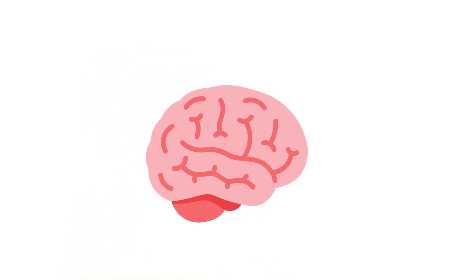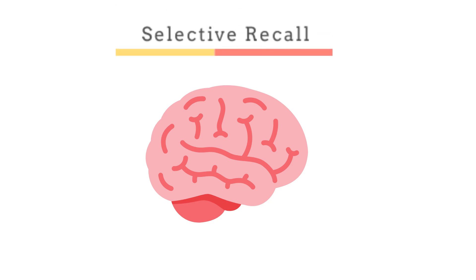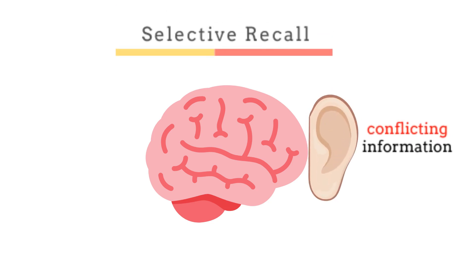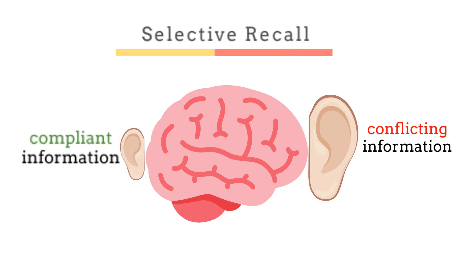The first mechanism is selective recall. Selective recall means that conflicting information to your own opinion is more salient than compliant information and therefore is easier to remember. The result? A biased image.